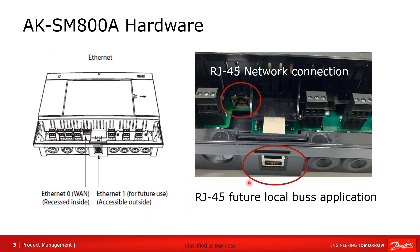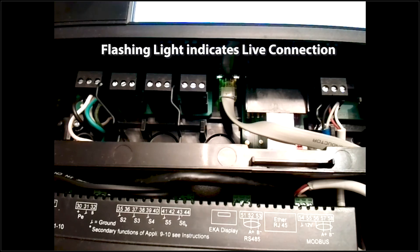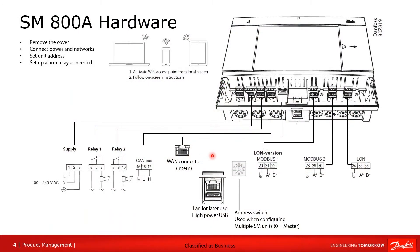On the control hardware, there are two RJ45 connection points. There's one that sits external, noted as a future local bus application, so we're not using this one at this stage. The one we do use sits internal, right underneath the top lid — that's where you make your connection for the Ethernet. This picture is an overview from the manual, so if you're ever in question, go straight to the manual. It shows the internal connection we use and the external one marked for later use.